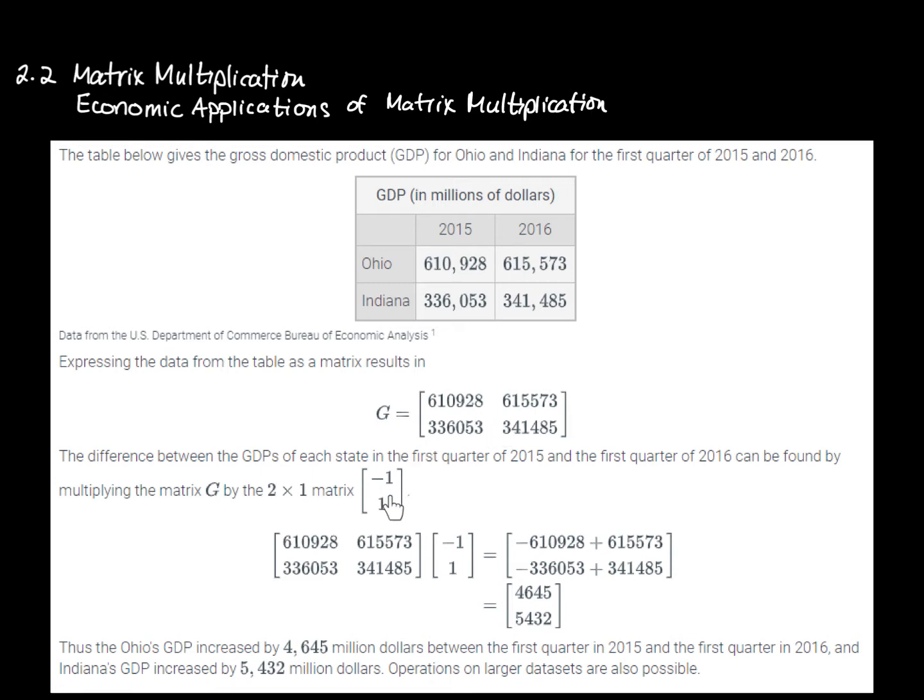This is a column matrix because it only has one column. By multiplying these matrices together in this order,